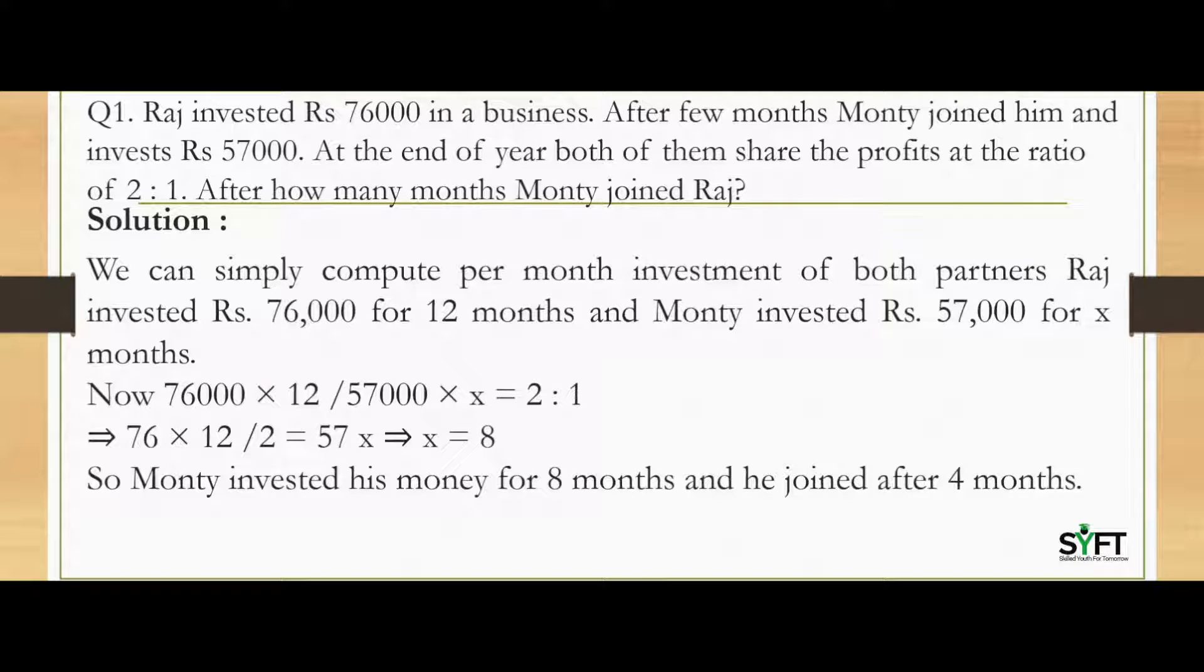Here the capital invested by them is Rs.76,000 and Rs.57,000 respectively, and the profit sharing ratio is 2 is to 1. Where Raj invested Rs.76,000 for 12 months, we need to find out the tenure of Monty's investment. So we can simply compute per month investment of both partners.